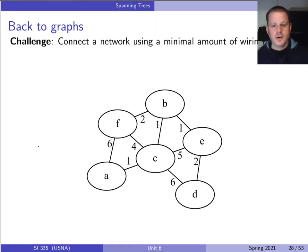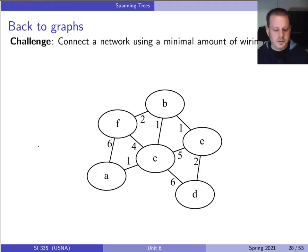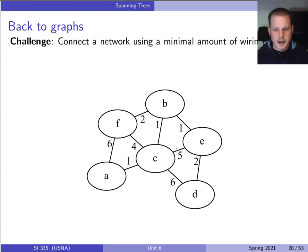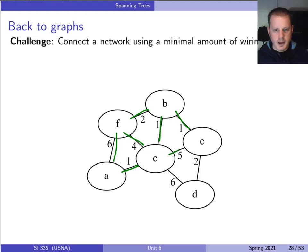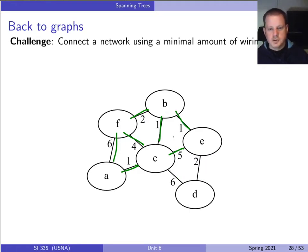Here's the new problem — minimum spanning trees. The goal is to connect a graph using the minimal total weight of edges. Here's a graph with nodes a, b, c, d, e, f — we want to pick which edges to include so that everything is connected and the total edge weight is minimal. We could just pick every edge, but that's clearly inefficient since some edges are redundant.